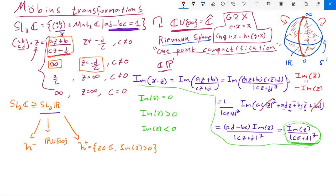One way of understanding the action of SL2C on all the complex numbers is to look at how SL2R breaks up this action into these three separate pieces.